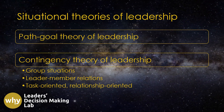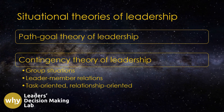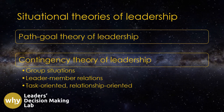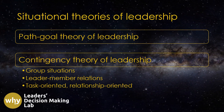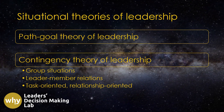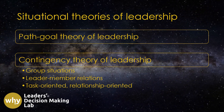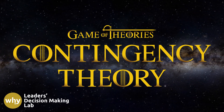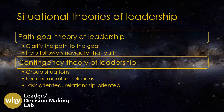In my earlier video, I introduced another leadership theory that belongs to this category of Situational Theory of Leadership — Contingency Theory of Leadership — which identifies two key situational factors: group situations and leader-member relations. Based on those two factors, the Contingency Theory proposes two leadership styles: task-oriented and relationship-oriented. If you want to learn more about Contingency Theory of Leadership, check out my earlier video.